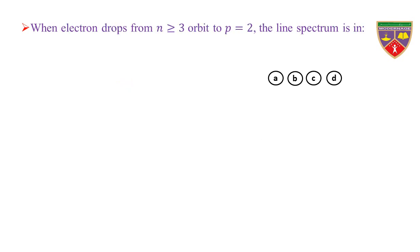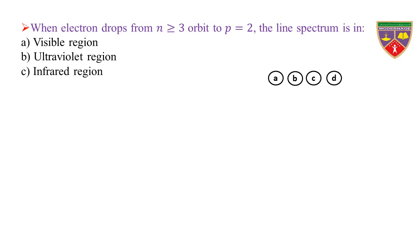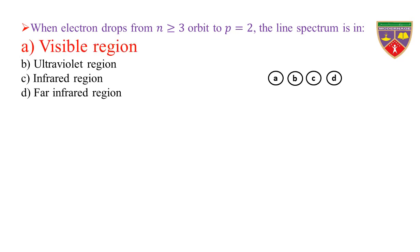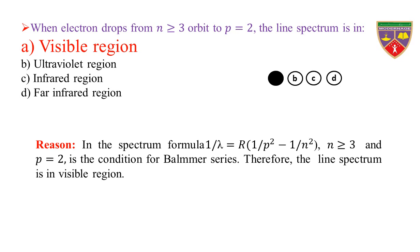When an electron drops from n ≥ 3 to orbit p = 2, the line spectrum is in: Option A, visible region; Option B, ultraviolet region; Option C, infrared region; Option D, infrared region. The key is visible region. Therefore, the correct option is A.